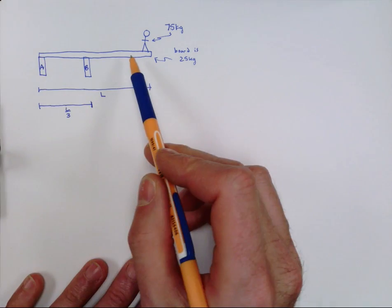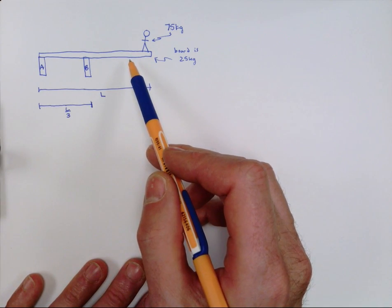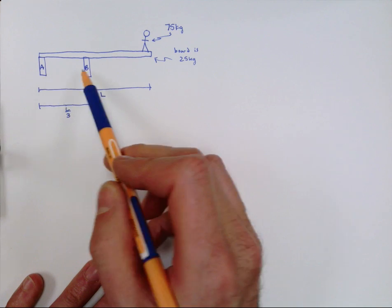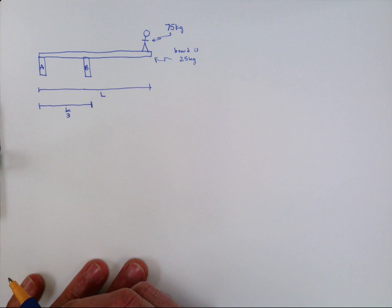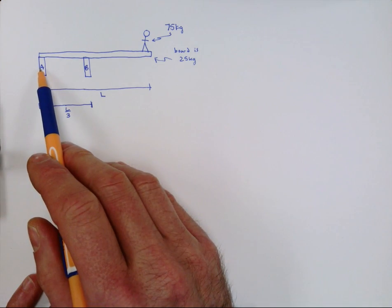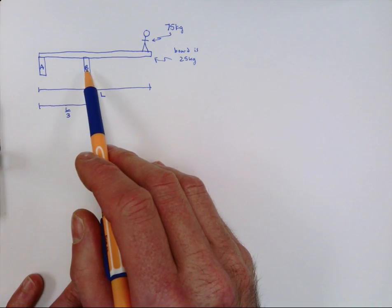We have a diving board supported by two parts, A and B, and we have a person at the end of the diving board. Our goal here is to try to figure out how much force is being exerted at A and how much force is being exerted at B.